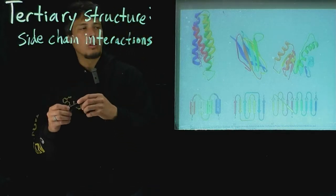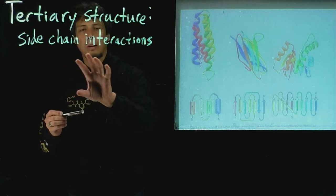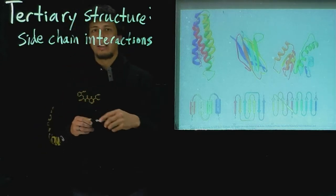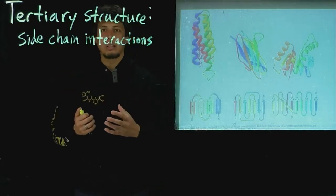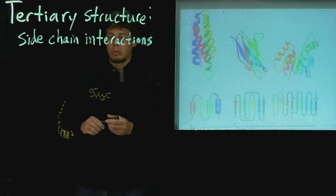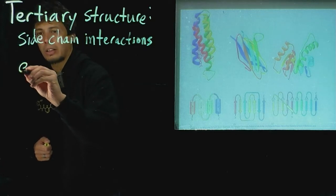So what we look at then is how are different interactions possible between these sidechains. So that brings back all the interactions that we can think about. So one, we can have electrostatic interactions.